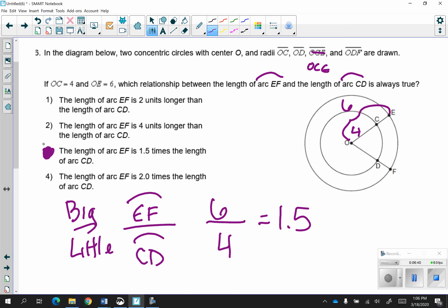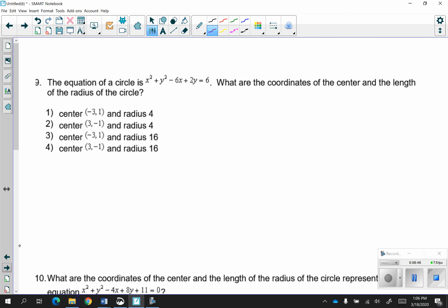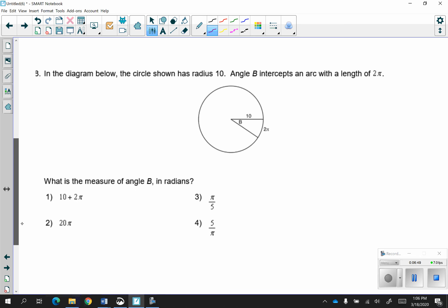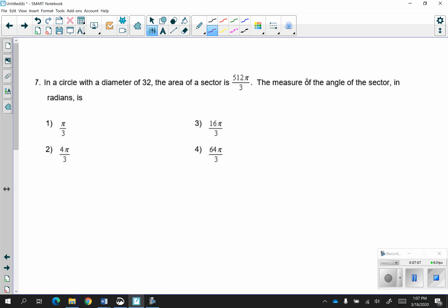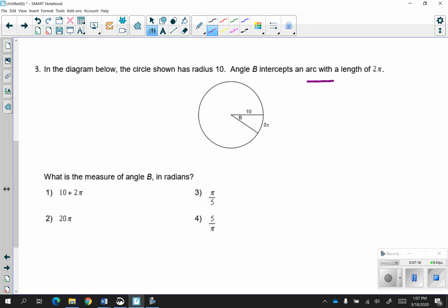Let's go to question 8. In the diagram below, the circle shown has radius 10. Angle B intercepts an arc with length 2 pi. What is the measure of angle B in radians? Let's go back and look again. Arc with a length of 2 pi. So now we know we're talking arc length. Little to big.